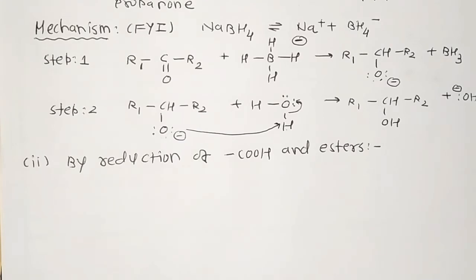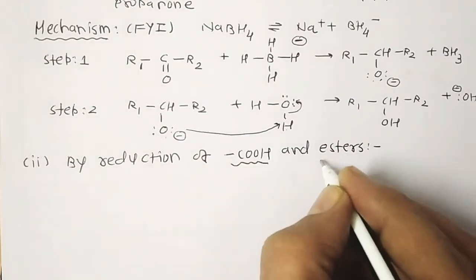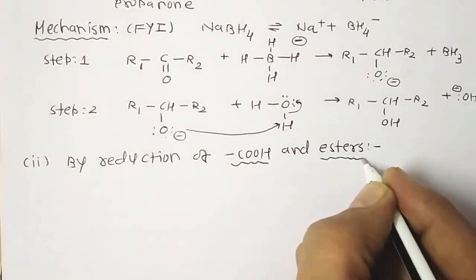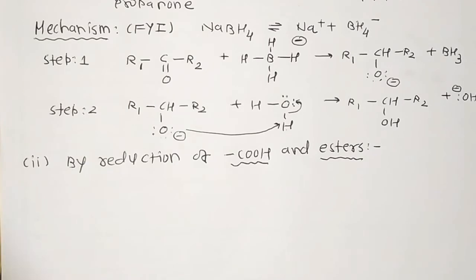We now move to another point: the reduction of carboxylic acids (C=O with OH) and esters. In the case of carboxylic acid, for example R–C(=O)–OH, reduction with lithium aluminium hydride (LiAlH₄) is performed.